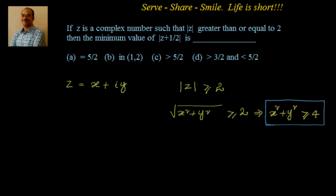We know that x² plus y² is greater than or equal to 4. So if we want the minimum value from this, since it is greater than or equal to 4, the minimum value of x² plus y² will be 4 only. Now let us go to the next step — we have to find out the minimum value of the modulus of z plus 1 by 2.